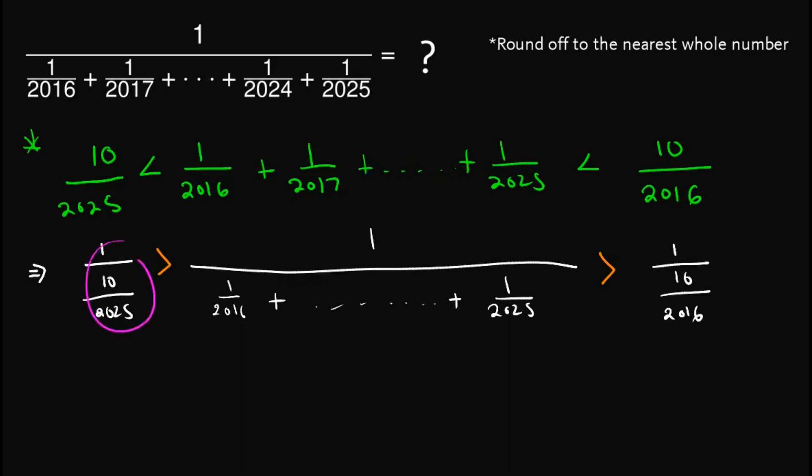So simplifying this, you can recall the concept on division of fractions. This would become 2025 over 10, and this one becomes 2016 over 10, which simplifies into 202.5 and this simplifies into 201.6.